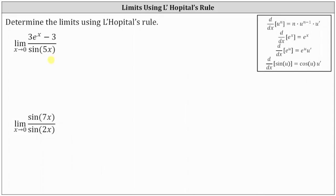Let's begin by checking the form of the limit by performing direct substitution. We have three e to the zero minus three divided by sine of five times zero. E to the zero is one, so the numerator is three minus three, or zero, and the denominator is sine zero, which is also zero. We have the indeterminate form of zero divided by zero.